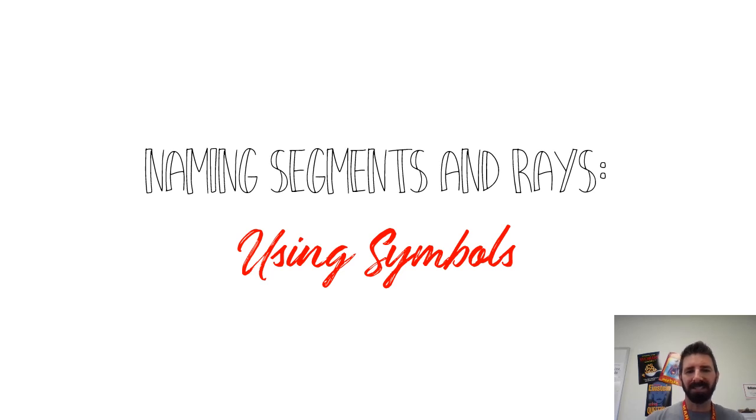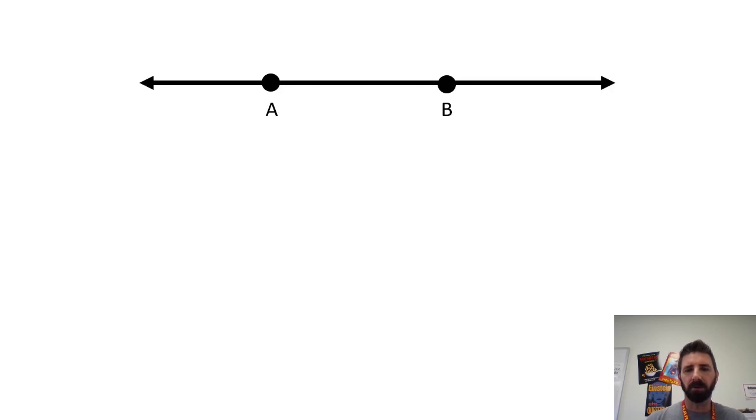Hey guys, I'm Mr. Ziegler. We're going to be talking about using symbols when naming segments and rays. You've already learned how to name lines, segments, and rays in the past, but we need to focus on the symbols to communicate what part of the line we're talking about specifically when we're getting into segments and rays.